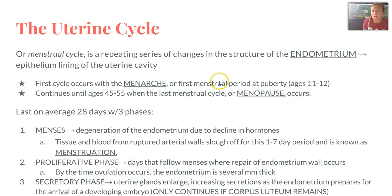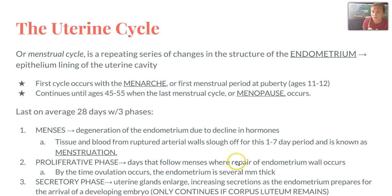The uterine or menstrual cycle is a repeating series of changes in the endometrium, the epithelial lining of the uterine cavity — and it occurs alongside the ovarian cycle. The first menstrual period at puberty is called menarche, and it continues until age 45 to 55 when menopause occurs. It lasts on average 28 days with three phases. The menses is degeneration of the endometrium due to a decline in hormones — tissue and blood slough off over about seven days. The proliferative phase follows, where repair of the endometrium wall occurs; by ovulation, the endometrium is several millimeters thick. The secretory phase is when uterine glands enlarge and increase secretions to prepare for a developing embryo, continuing only if the corpus luteum remains.